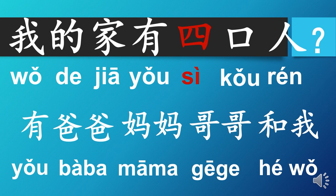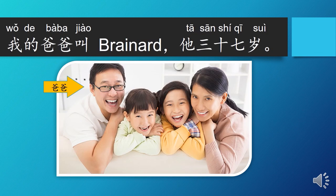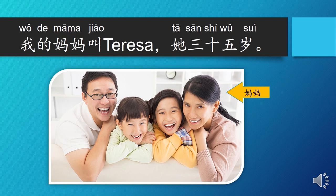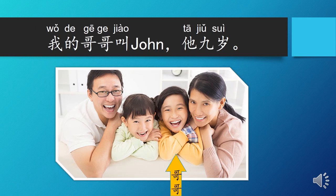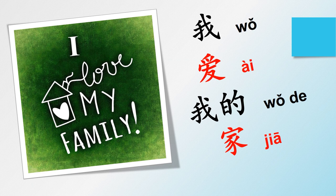After introducing yourself and how many family members you have, you then introduce each family member's name and age. 我的爸爸叫Brainard，他三十七岁. My father's name is Brainard, and he is 37 years old. 我的妈妈叫Teresa，他三十五岁. My mom's name is Teresa, and she is 35 years old. 我的哥哥叫John，他九岁. My elder brother's name is John, and he is 9 years old. And to end our introduction, we say 我爱我的家 — I love my family.